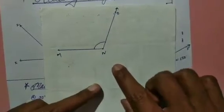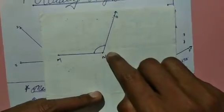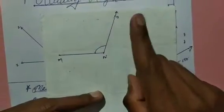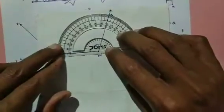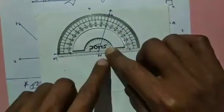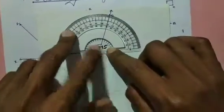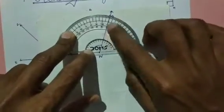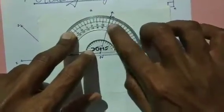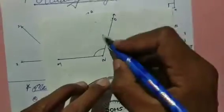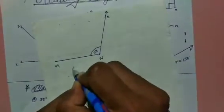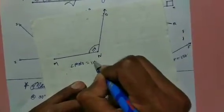Here we have angle MNO, which is an obtuse angle, so its degree will be more than 90. Place the midpoint of the protractor on point N and align the baseline MN. Ray NO is lying on 110. So angle MNO equals 110 degrees.